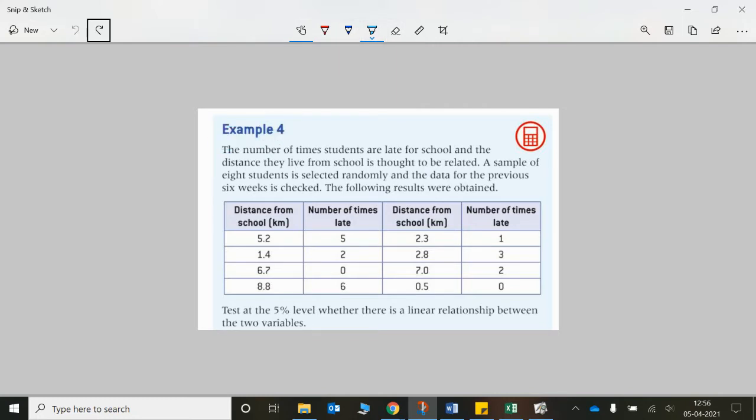It says Example 4: the number of times students are late for school and the distance that they live from the school is thought to be related. A sample of eight students is selected randomly and the data for the previous six weeks is checked. The following results were obtained.